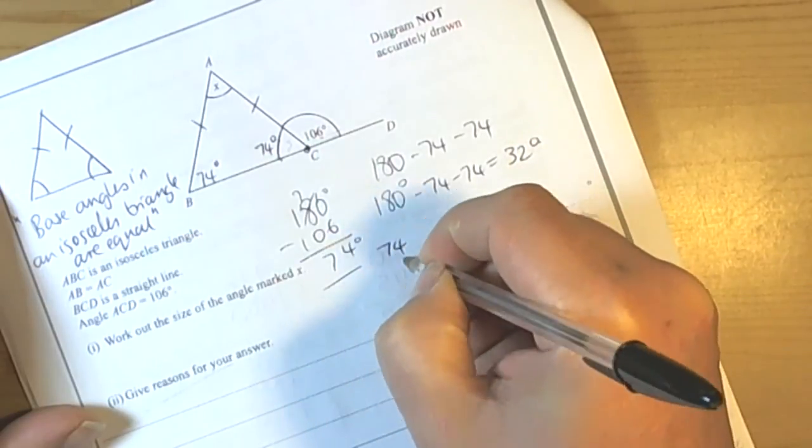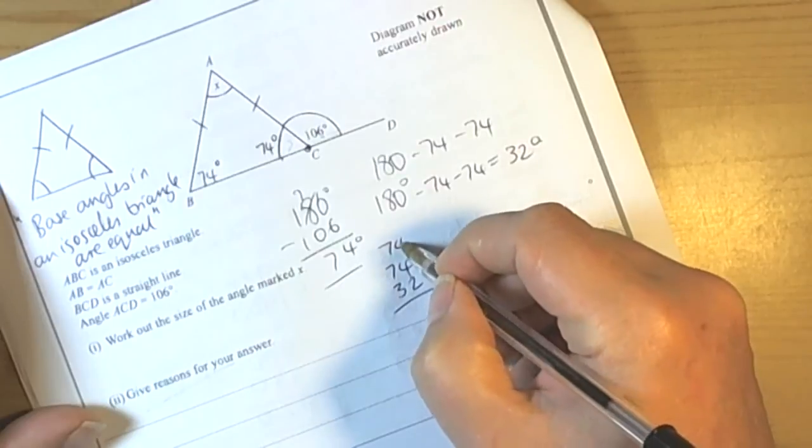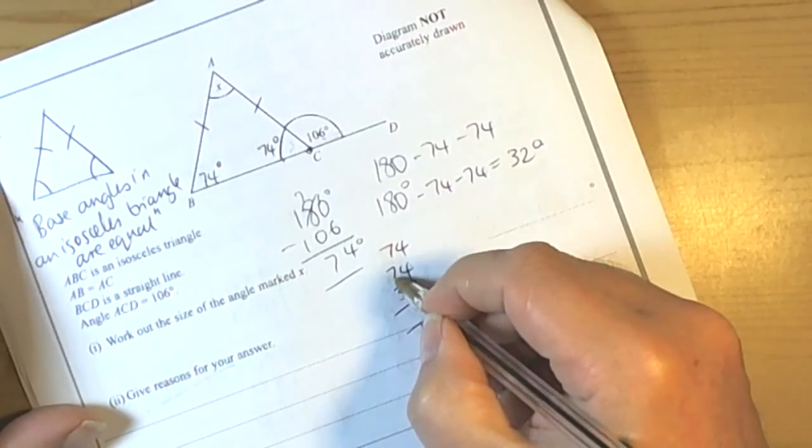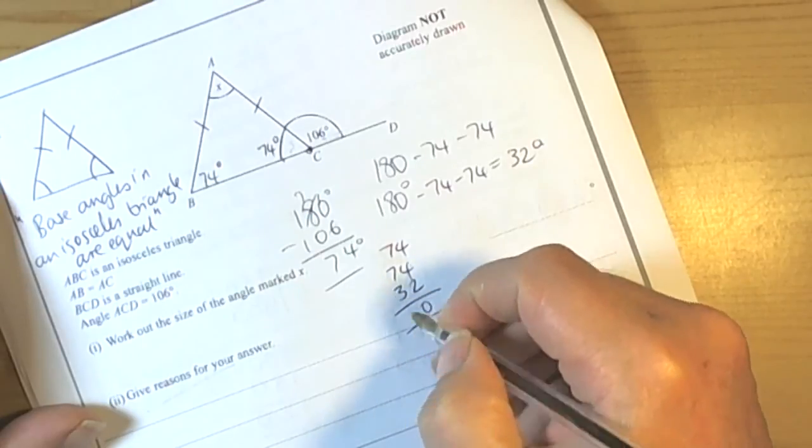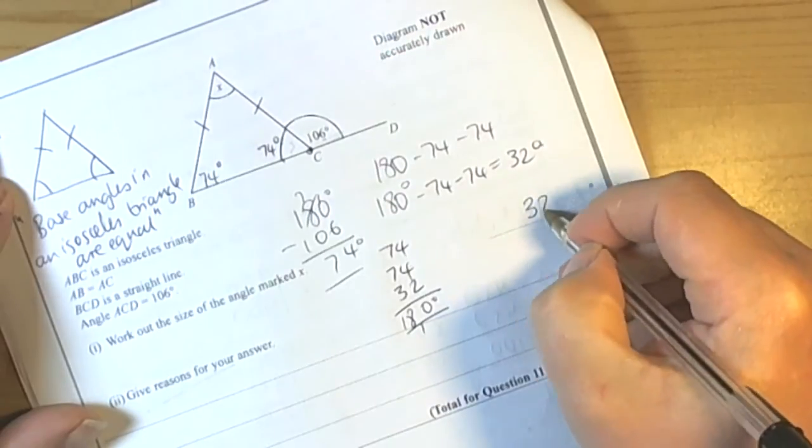Now we should check that by back-adding just to make sure it all worked. So let's have a look: 4 add 4 add 2 is 10, so carry the 1 over. 7 add 7 is 14, add the 3 is 17, add the 1 is 18. So the back check worked. The answer here is 32 degrees.